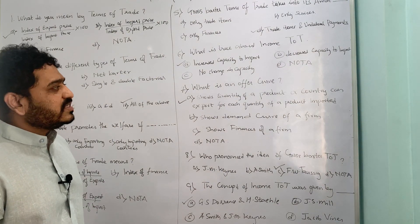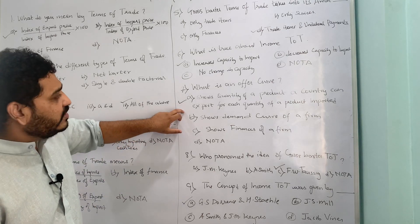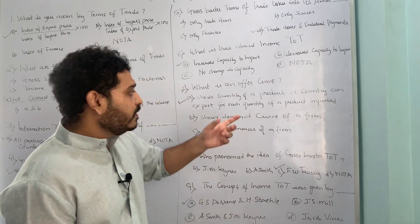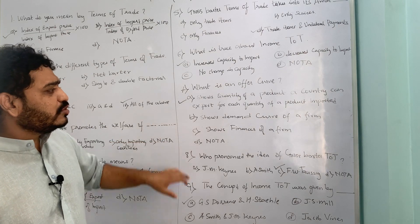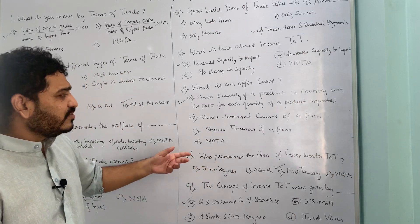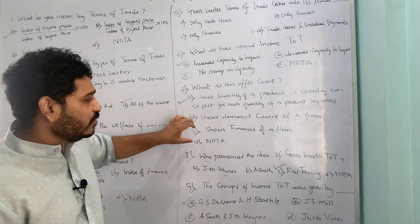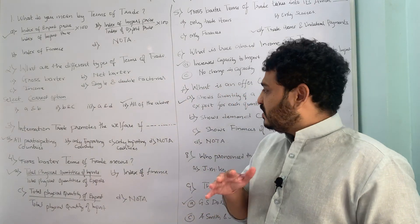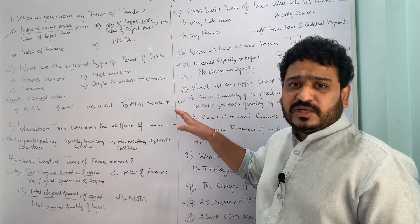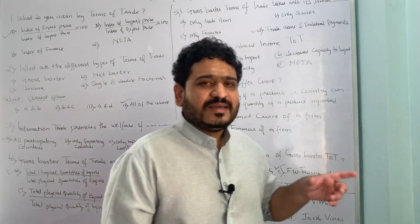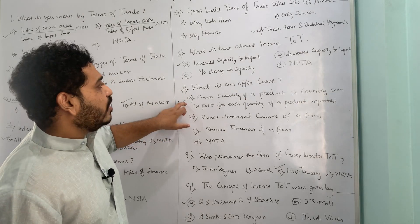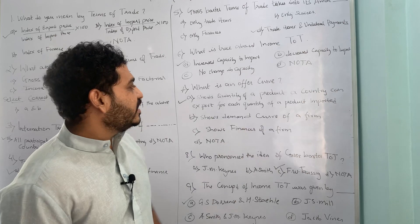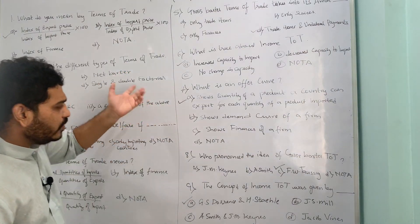The seventh MCQ asks: what is an offer curve? The options are: (A) it shows the quantity of a product a country can export for each quantity of a product it imports; (B) it shows demand curves of a firm; (C) it shows finances of a firm; (D) none of the above. Options B and C are vague and don't relate to trade. When an option is lengthy, read it carefully — it is often correct. The answer is A: an offer curve shows the quantity of a product a country can export for each quantity of a product it imports.